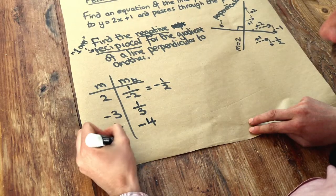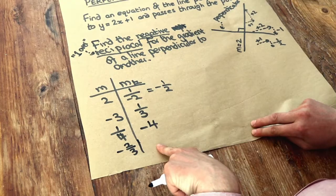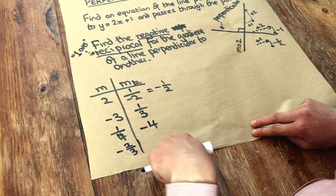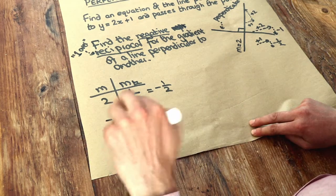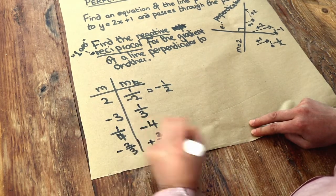And finally, if we had say negative 2 thirds, well the negative becomes positive if you're finding the gradient of a perpendicular line, so it becomes positive, and doing the reciprocal of a fraction flips it upside down, we get 3 over 2.